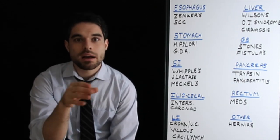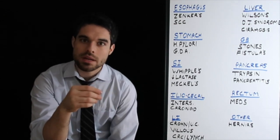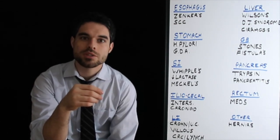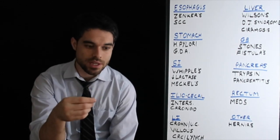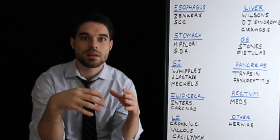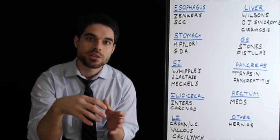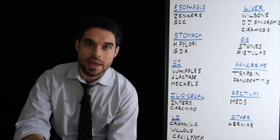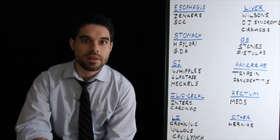In the ileocecal valve, just in between the small intestine and the large intestine, a whole bunch of pathology shows up there. It's quite interesting. There's a lot of lymphoid tissue there. So if you have an infection, it can inflame the lymph tissue and that can block the appendix, causing appendicitis. The increased luminal pressure can cause intussusceptions.